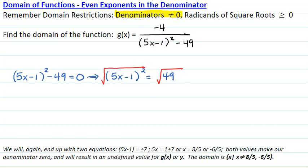Again, because these are even roots, we have two equations, one with plus and one with minus. We will end up with the equation 5x minus 1 equals plus or minus the square root of 49, which is 7. We will add 1 to both sides and we will get 5x equals 1 plus or minus 7, and we will divide by 5 and we will have two solutions.